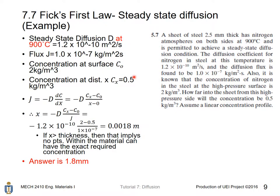The diffusion coefficient D, or the diffusivity D, at 900 degrees Celsius is given here. The diffusion coefficient for nitrogen in steel at this temperature is 1.2 times 10 to the power -10 m²/s.